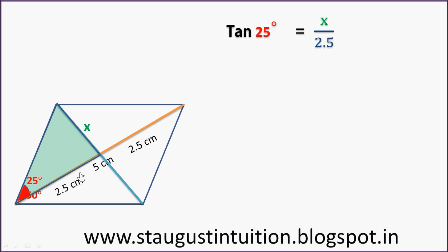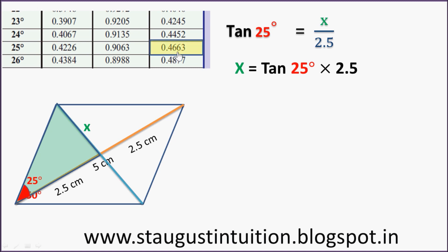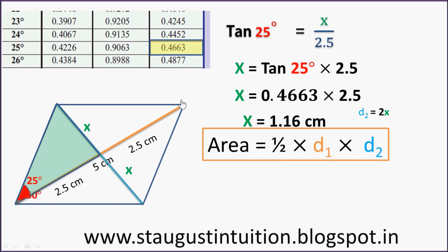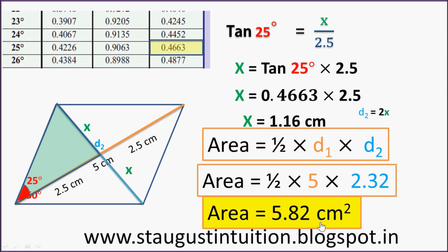Tan(25°) equals x divided by 2.5. From the table, tan(25°) is approximately 0.4663. So x is equal to 0.4663 multiplied by 2.5, which gives x equal to 1.16 cm. Therefore D2 is equal to 2x, which is 2.32 cm. Area is equal to half into D1 into D2, which is half into 5 into 2.32, giving an area of 5.82 cm².